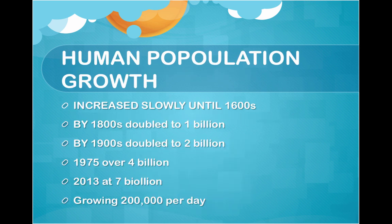Human population growth increased very slowly up until the 1600s, when the population was about 500 million. By the 1800s, it doubled to 1 billion, and by the 1900s, it doubled again to 2 billion. In 1975, it was over 4 billion. In 2013, it reached 7 billion. The population is currently growing by 200,000 people per day.